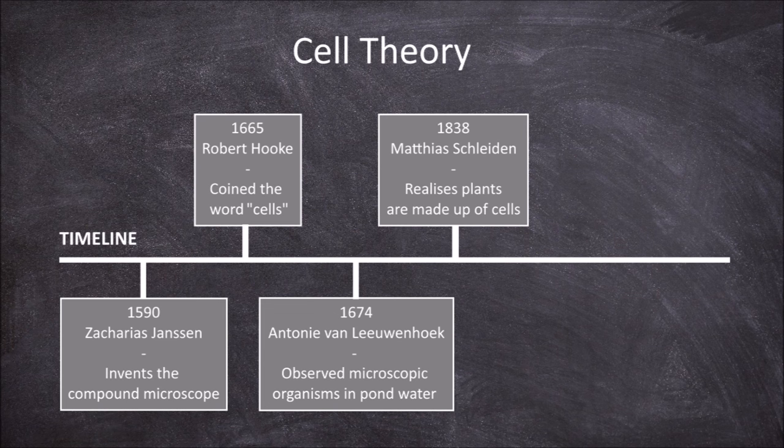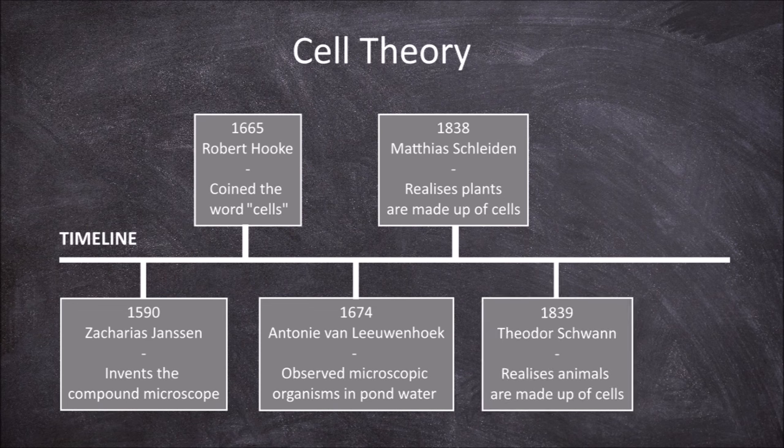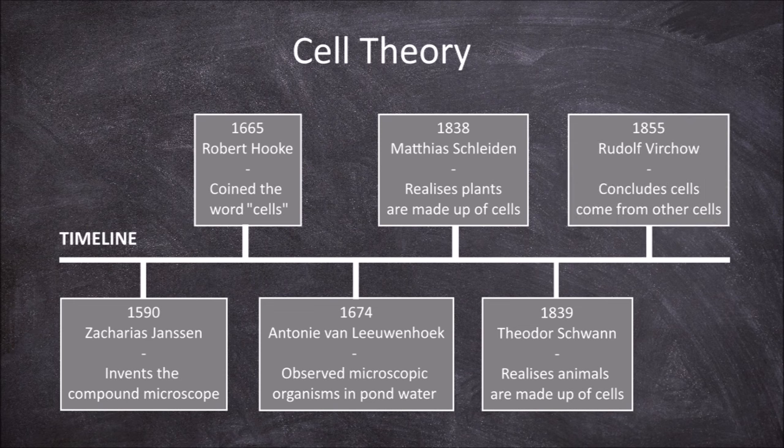In 1838, Matthias Schleiden, after spending much time observing plants under the microscope, realized that all plants are made up of cells. He is co-credited with Theodor Schwann, who in 1839 realized that all animals are made up of cells, for developing the first two principles of cell theory. In 1855, Rudolf Virchow concluded that all cells come from cells, and is credited for the third principle of cell theory.